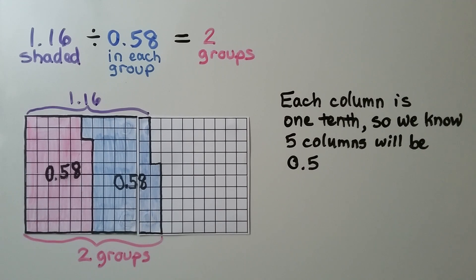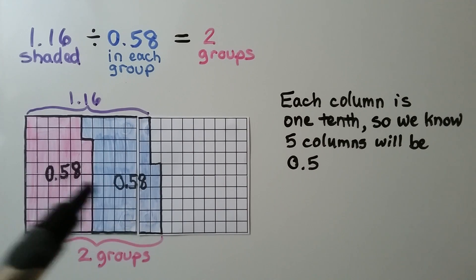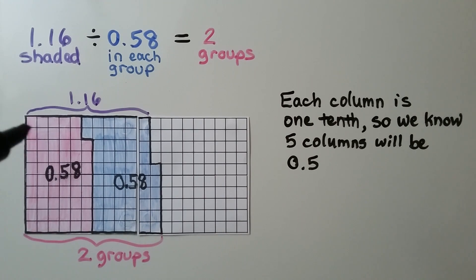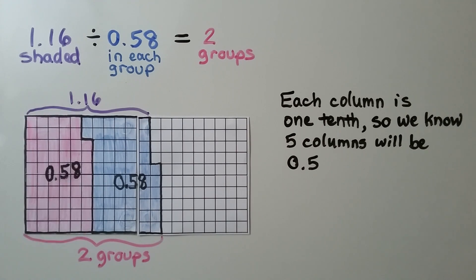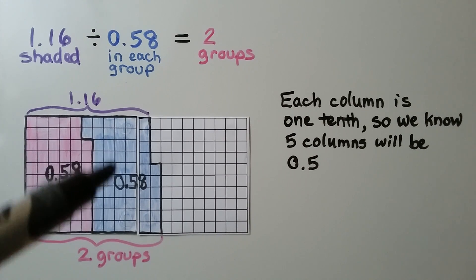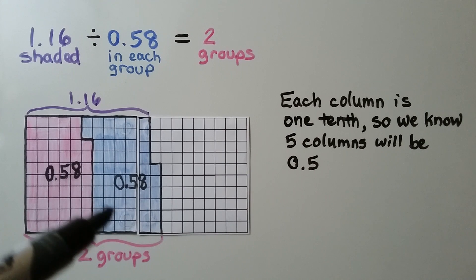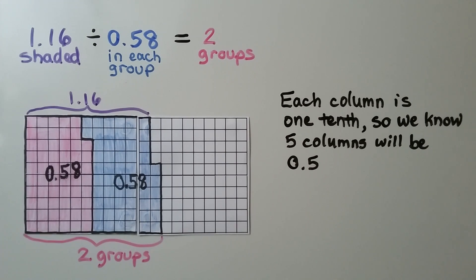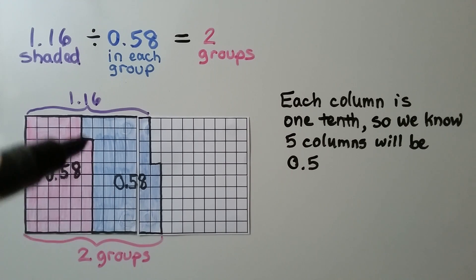We have 1 and 16 hundredths divided by 58 hundredths. We have 1 full model and 16 separate little squares for 1 and 16 hundredths. We count off 50 squares and 8 separate ones for 58 hundredths, then draw a line or cut to separate it. We count out another 58 and see that we have 2 groups — it's equal to 2. Remember, each column is 1 tenth, so 5 columns will be 5 tenths; then we add 8 little separate ones for the 8 hundredths.